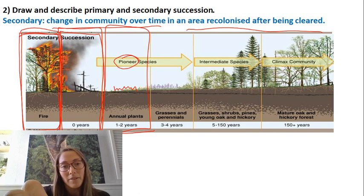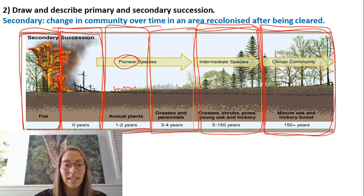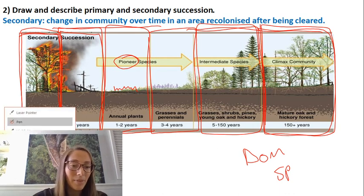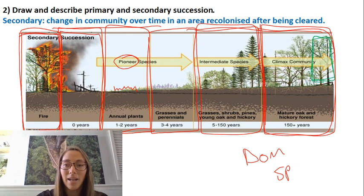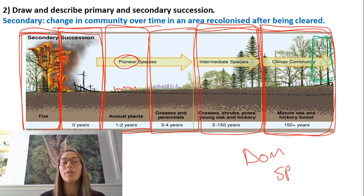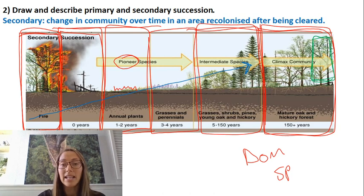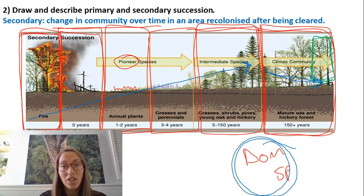After more time, larger and larger organisms form, and eventually we get a climax community. The climax community has a dominant species — for example, trees. Interestingly, you might think biodiversity just keeps increasing through succession, but in fact biodiversity increases until you reach the climax community and then decreases slightly, because the dominant species occupies most of the area and its resources.